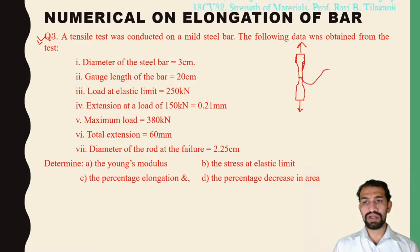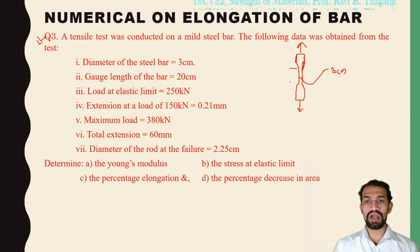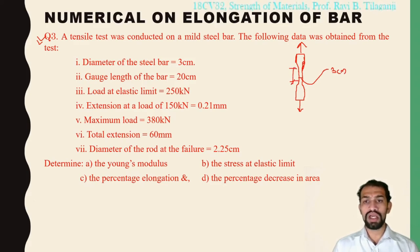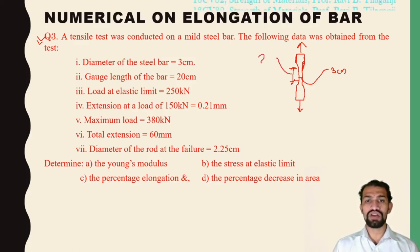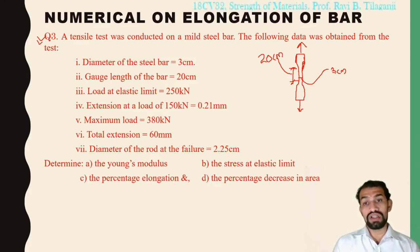The diameter of the steel bar is 3 centimeters. The second data point is the gauge length of the bar — not the total length, but the gauge length marked on the bar for the tensile test, which is 20 centimeters.